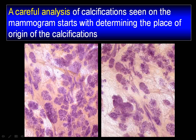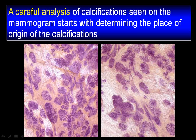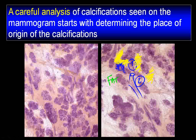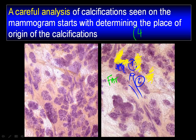Dear colleagues, here are the four basic building blocks: the terminal ductal lobular unit, number one; the ducts and the branches, number two. And they are supported by yellow fibrosis or by white adipose tissue. So we have actually four basic building blocks.